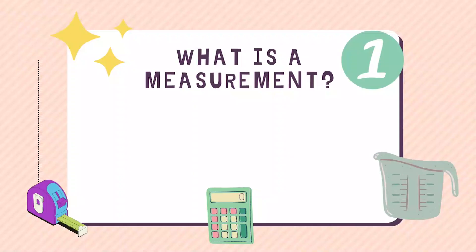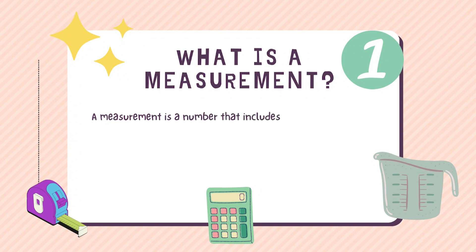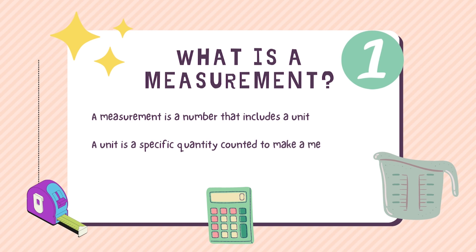What is a measurement? A measurement is a number that includes a unit. A unit is a specific quantity that is counted to make a measurement. The unit provides information about the type of measurement.